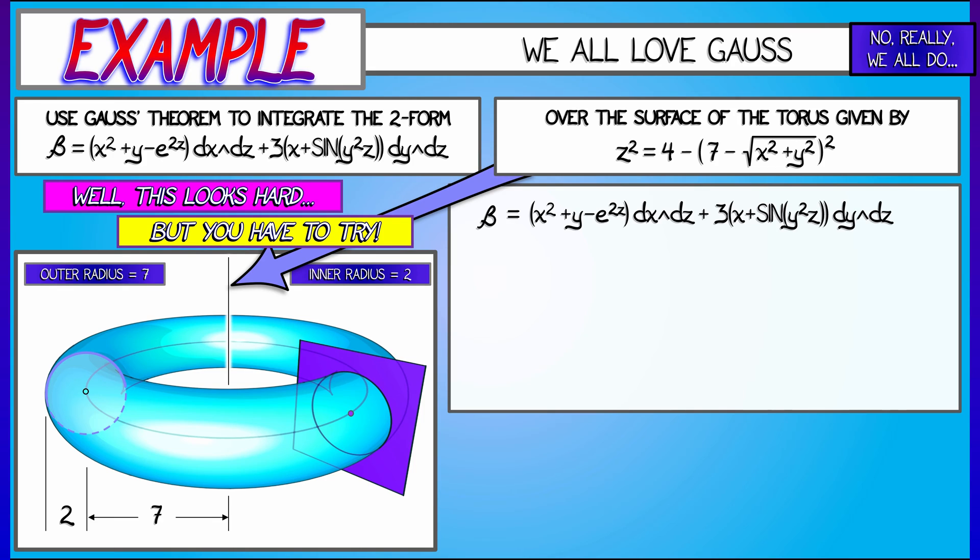I have to take the derivative of the coefficient function out in front and then wedge it with what's left over. So d-beta is given by, I differentiate that first coefficient function: I get 2x dx + dy - 2e^(2z) dz, wedged with dx∧dz. Then for the second term, I take the derivative of the coefficient function up front, yielding 3(dx + 2yz sin(y²z) dy + y² sin(y²z) dz), all of that wedged with dy∧dz.